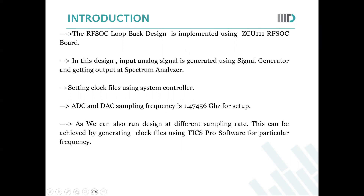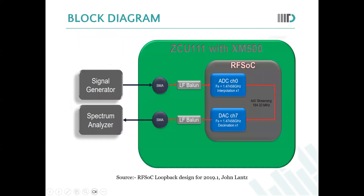We can also run the design at a different sampling rate, but that can be achieved by generating the clock files using the TICS Pro software for a particular frequency. This is the block diagram — we are giving the signal from the signal generator. It could be any signal: sinusoidal, triangular, or square, at any frequency, given as input to the ADC.